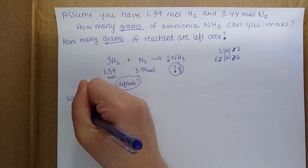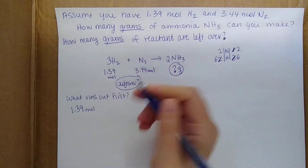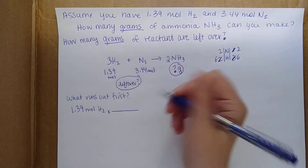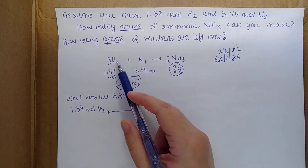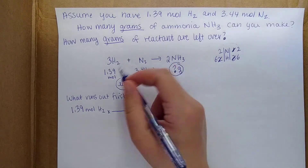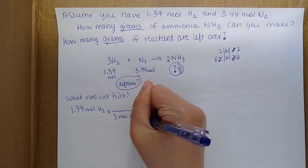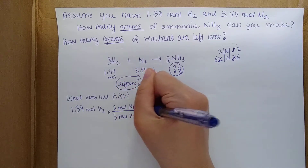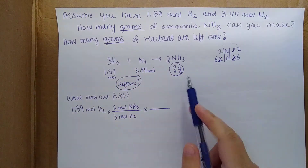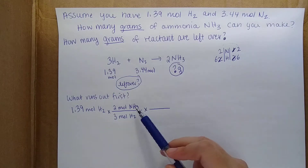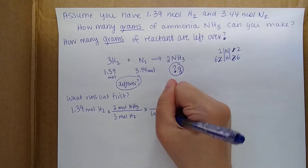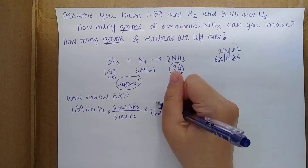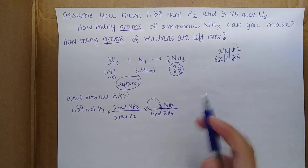Starting with our first reactant: we have 1.39 moles of H2, and we want to figure out how many grams of product. We go from moles of H2 to moles of product using the mole ratio — for every 3 moles of H2, we get 2 moles of ammonia. Then since it's asking for grams, we convert moles of ammonia into grams: for every 1 mole of ammonia, there's however many grams. We'll solve for that molar mass in a moment.